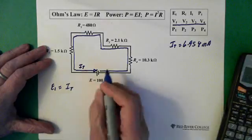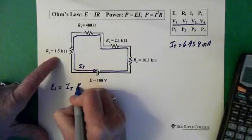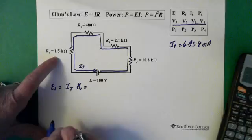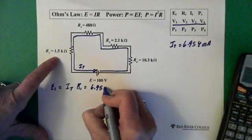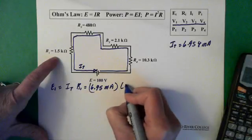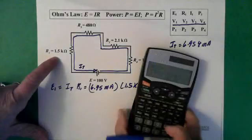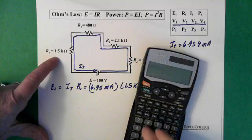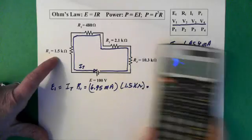So I total times R1, which is 6.954 milliamps times 1.5 kilohms, which equals, we're multiplying it by 1.5 exponent 3 equals 10.43 volts.